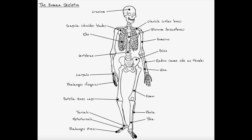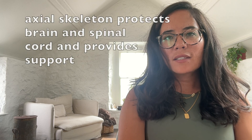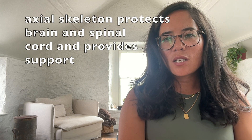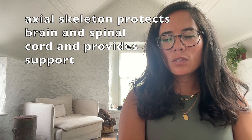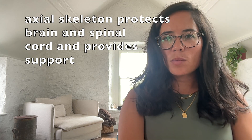Getting into more detail now to do with the axial skeleton. The axial skeleton consists of the rib cage, the vertebrae, and the cranium. The functions of the axial skeleton are to protect your brain and spinal cord and to provide support.